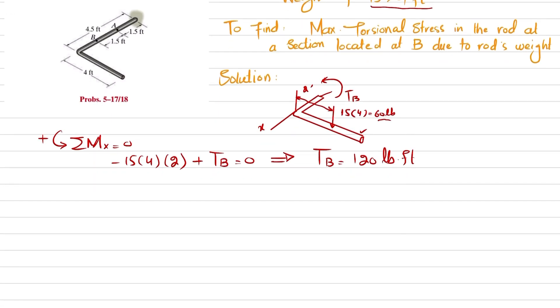If you want to convert it to inches: T_B equals 120 pounds times 12 inches per foot, so T_B equals 1440 pound-inches. This is the torque at point B.